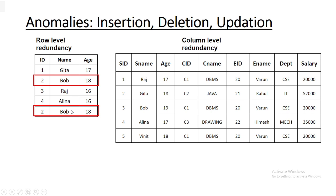After declaring id as a primary key, you can completely eliminate row-level redundancy. So for reducing or completely eliminating row-level redundancy, we can use the concept of primary key in our database. In another table, as you can see, there is column-level redundancy. If you observe this table, you will find there are no two identical rows, but you can find that some columns are exactly the same.